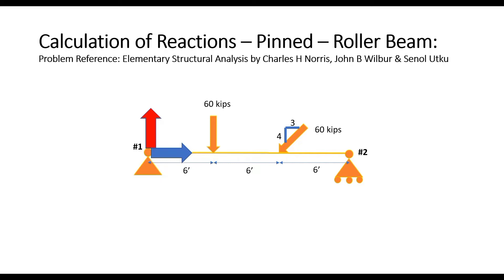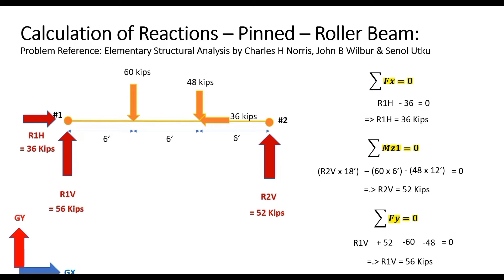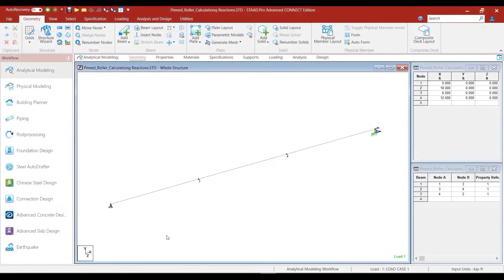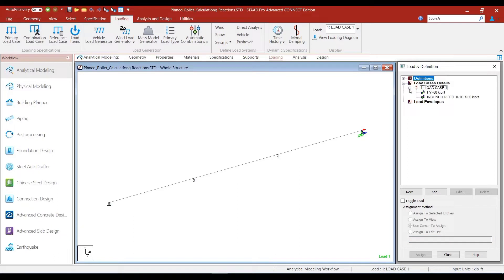The beam has a span of 18 feet. We had solved for the reactions using the equations of equilibrium. The vertical reaction at node one came out as 56 kips, the vertical reaction at node two as 52 kips, and the horizontal reaction at node one was 36 kips. We had also modeled the structure in StartPro with the point loads in load case one: a vertical load of 60 kips at node three and an inclined load of 60 kips at node four.